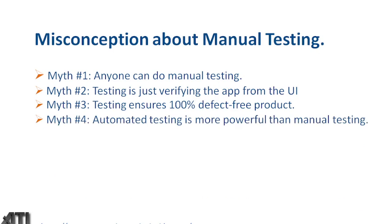Another myth is that automated testing is more powerful than manual testing — this is totally wrong. First, if your product is not stable, you cannot do automation testing at all. We need to perform manual testing first and ensure the application is good enough before going for automation testing. Manual testing and automation testing each have their own pros and cons — we cannot say that automated testing is more powerful than manual testing.